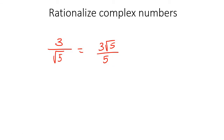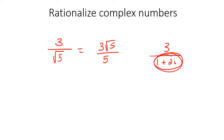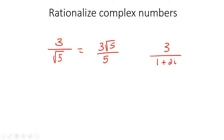Now, if you have a complex number in the denominator — a complex number has a real part and an imaginary part, or sometimes only an imaginary part — that is not a rational number. Calculators don't like that, and your teacher is going to ask you to change it. So in this lesson, I'm going to teach you how to make sure your final answer doesn't have any imaginary numbers in the denominator. It's okay to have imaginary numbers in the numerator, but not in the denominator.